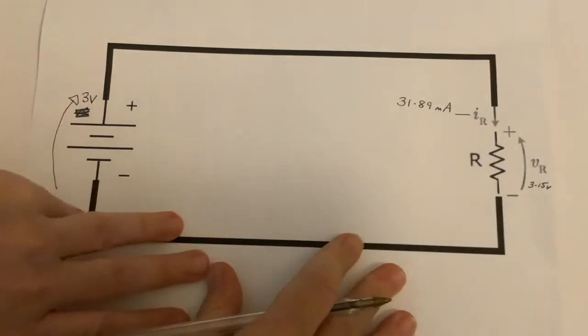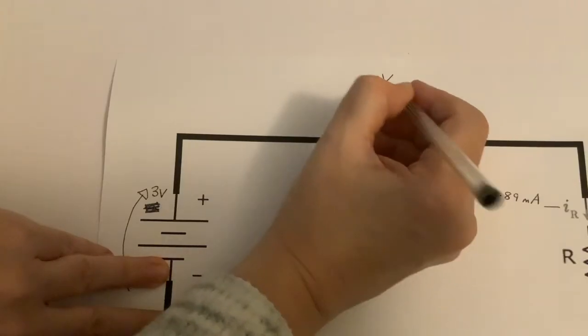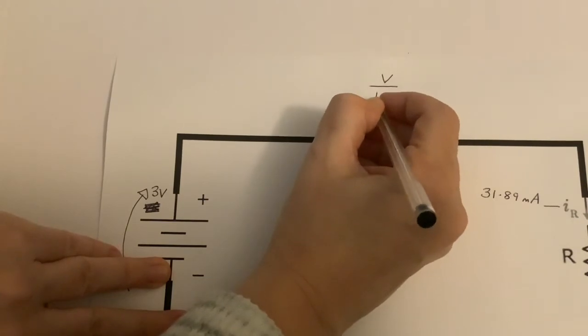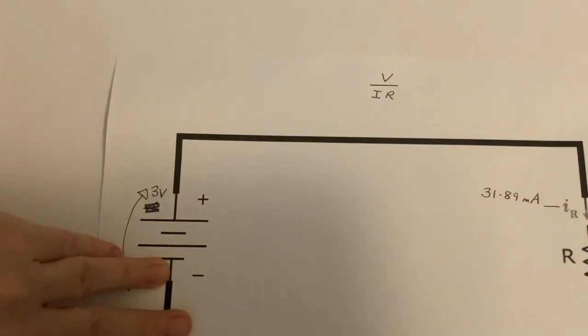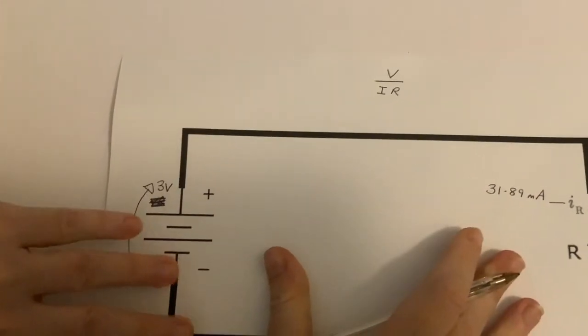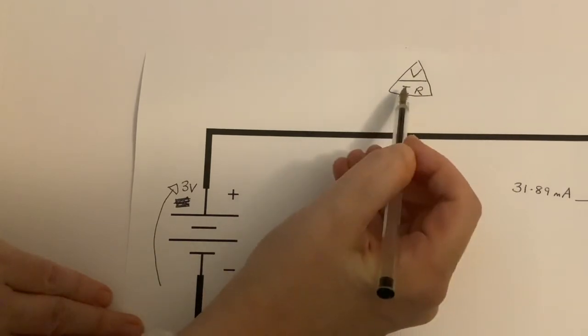That's right. Then I can do my calculation to find out the value of the resistor. V over IR—that's just a way of remembering it. What do you want to calculate? You want to calculate the resistance. I'm dividing the voltage by the current.